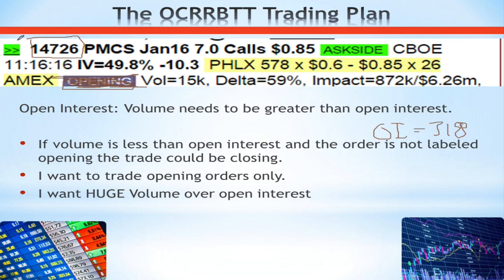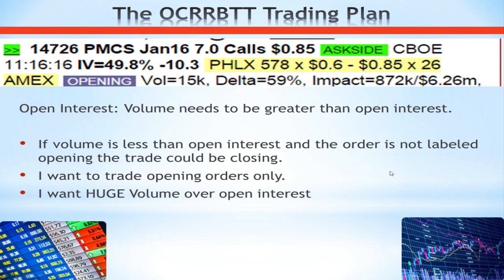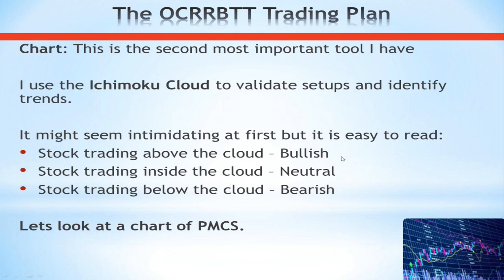I want to trade the biggest opening orders that I can, and I want to see the ratio of volume over Open Interest as large as possible. What's more significant: 20,000 contracts bought against Open Interest of 15,000, or 5,000 contracts bought against Open Interest of zero? The smaller order against zero Open Interest is by far the more interesting trade — it's much more significant relative to the interest that is already there. After I confirm it is an opening position, I then need to make a best estimate of whether the trade is a hedge or a speculative bet.